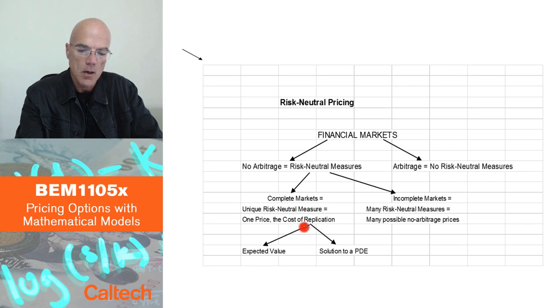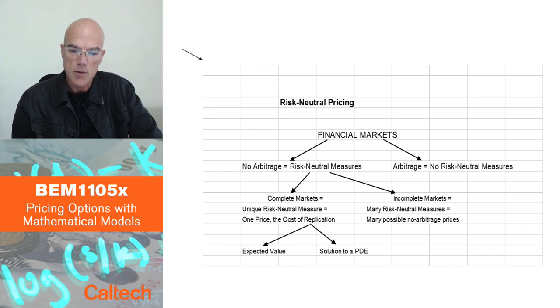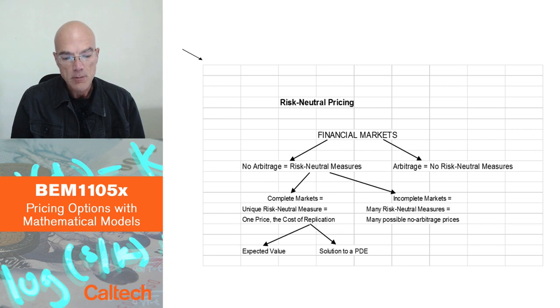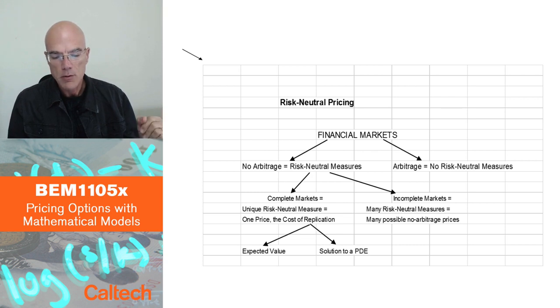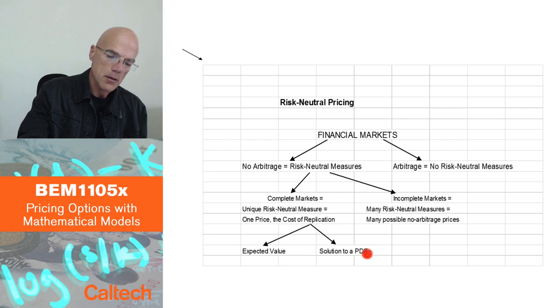And then, how to compute that price, which is really also true in incomplete markets. We will have the expected value approach, as we already discussed: expected value under the risk-neutral probability of the discounted payoff. And in our Black-Scholes-Merton model, continuous-time Brownian motion model, we will be computing that price as a solution to a PDE, a partial differential equation.